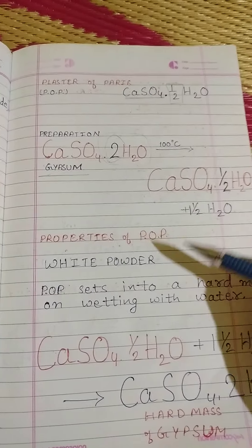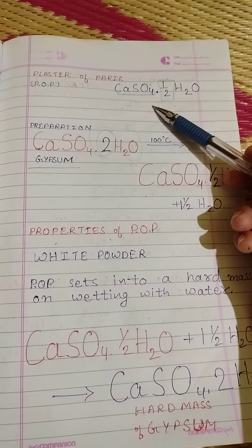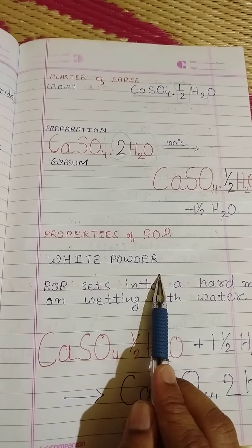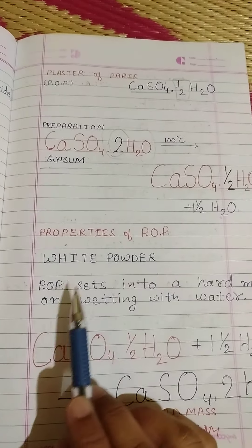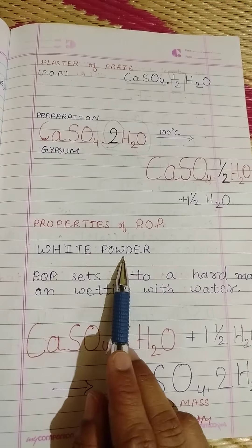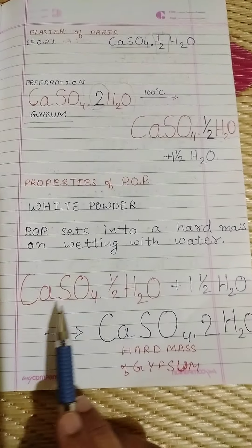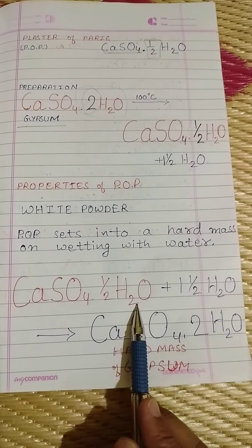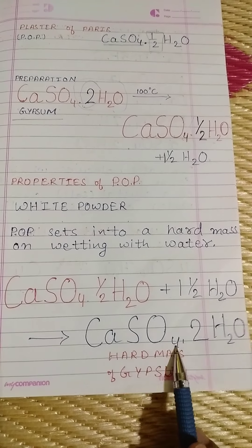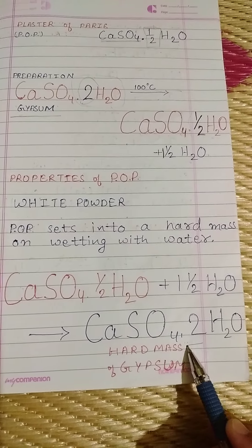We have to remember the formula of Plaster of Paris: calcium sulfate hemihydrate, CaSO4·½H2O. As for properties, it is a white powder with one very important property — when this white powder of POP is mixed with water, CaSO4·½H2O reacts with water and forms gypsum.